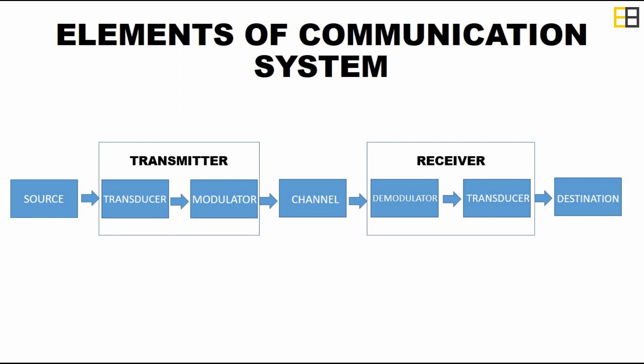The source can be of any type that produces a signal. For example, the source can be a microphone that records a non-electrical low frequency signal. This non-electrical low frequency signal is then passed on to a transducer. A transducer is a device that converts one form of signal to another form. Here, the transducer converts the non-electrical low frequency signal into an electrical low frequency signal.